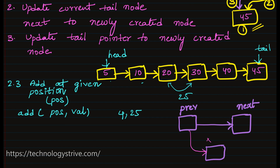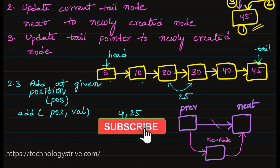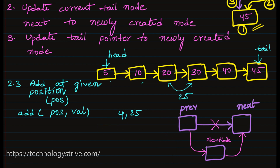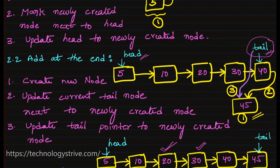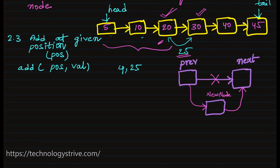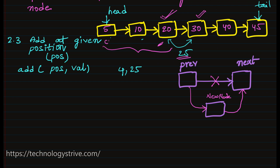The newly created node goes between the previous and next nodes. We update the previous element's next to point to the newly created node, and the new node's next to point to the next node, breaking the old link. To insert 25 we need to know the previous node which is 20 and the next node which is 30. To find the previous node, we traverse the list position minus one times using the traversal algorithm. We start with the head node as current and traverse three times.